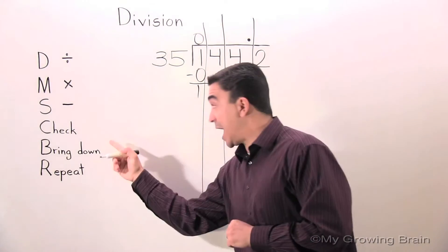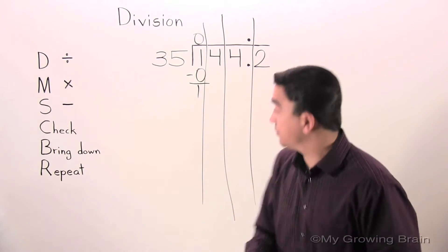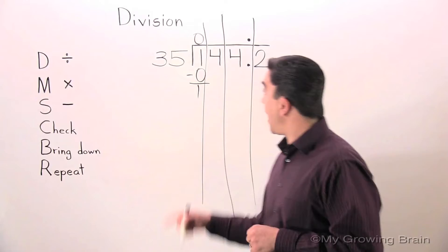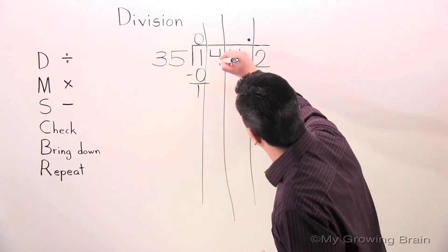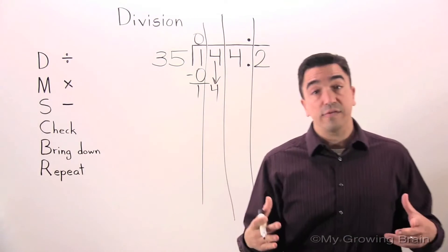Next step: check. 1 is less than 35, keep on going. Next step: bring down. Bring down the 4.